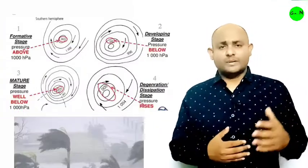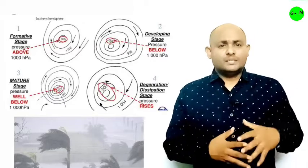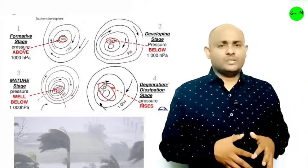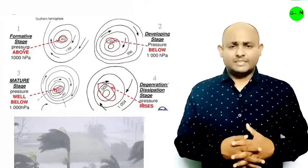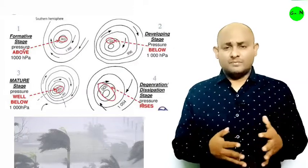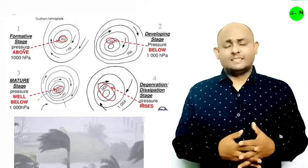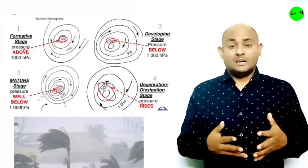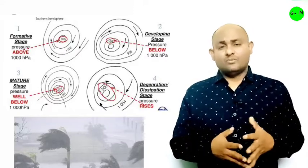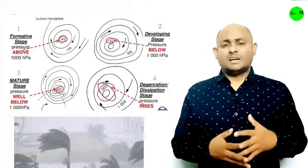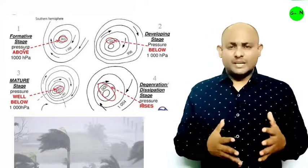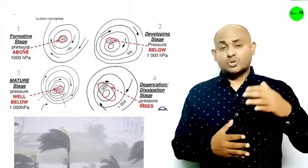Tropical cyclones may be divided into three stages. The first is the formation and initial development stage. The formation and initial development of a cyclone storm depend upon the transfer of water vapor and heat from the warm ocean to the overlying air, primarily by evaporation from the sea surface. This encourages the formation of massive vertical columns of cloud due to convection, with condensation of the rising air above the ocean surface.